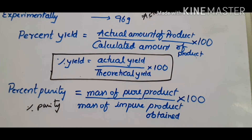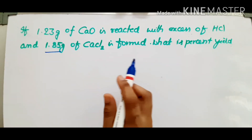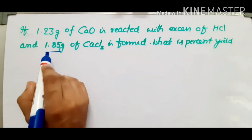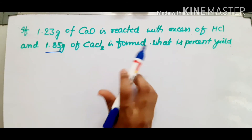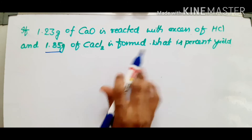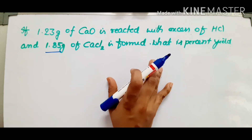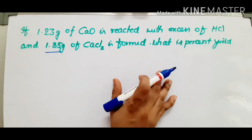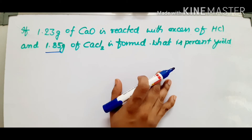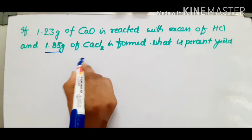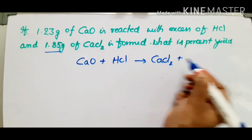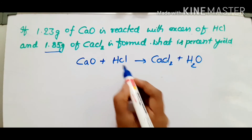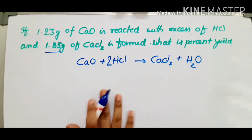Let's go into the examples. Example 1: If 1.23 g of calcium oxide is reacted with excess hydrochloric acid, 1.85 g of calcium chloride is formed. What is the percent yield? Before solving any stoichiometry question, write down and balance the equation first. The equation is: CaO + 2HCl → CaCl₂ + H₂O. This is the balanced equation.